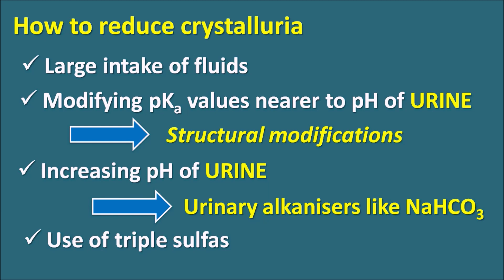The fourth approach is the use of triple or quadruple sulfa combinations. Multiple sulfonamides are mixed at reduced individual doses; each drug contributes to therapeutic activity but with less individual crystal formation, reducing total crystalluria. Among all approaches, structural modification to adjust pKa nearer to urinary pH is the most important.